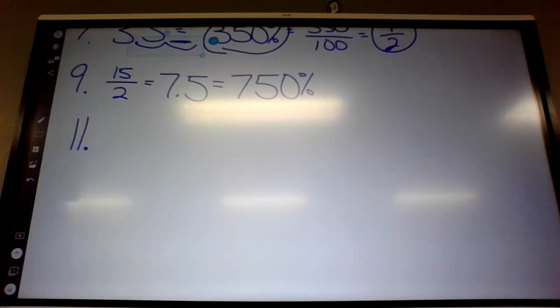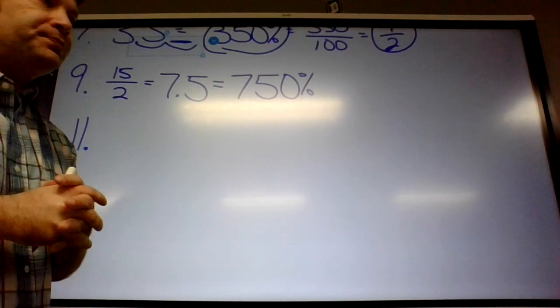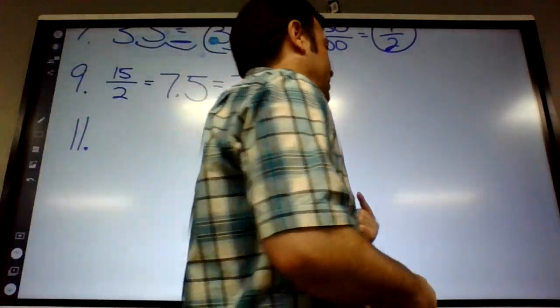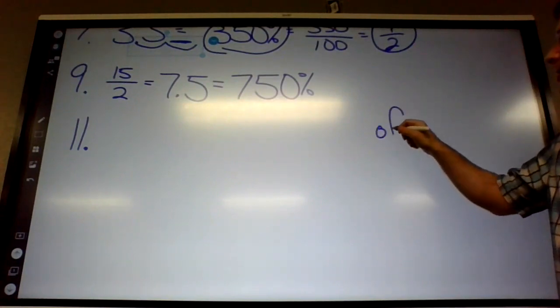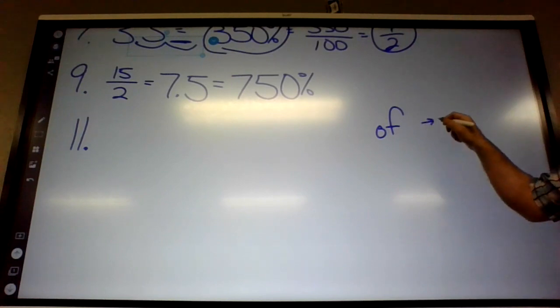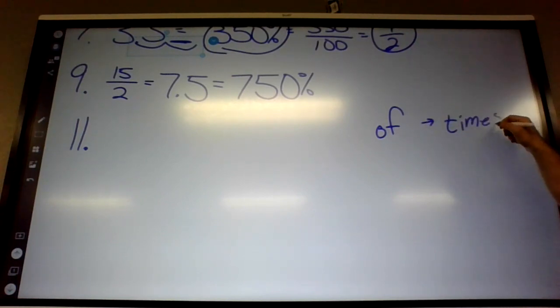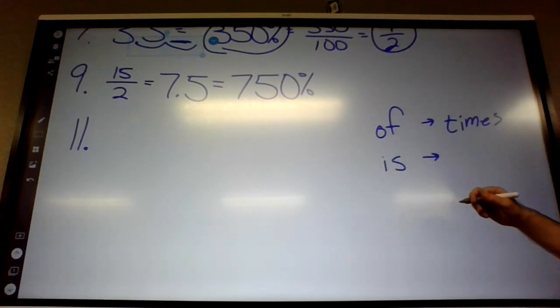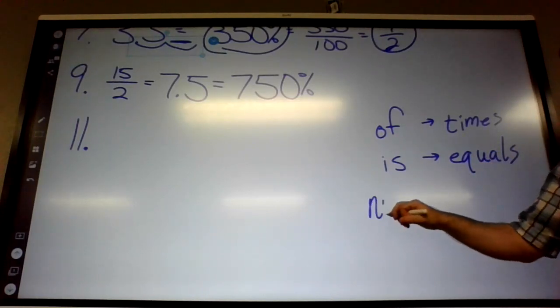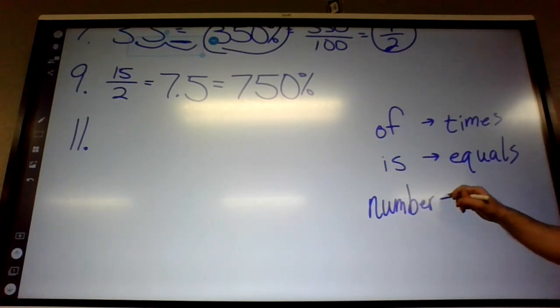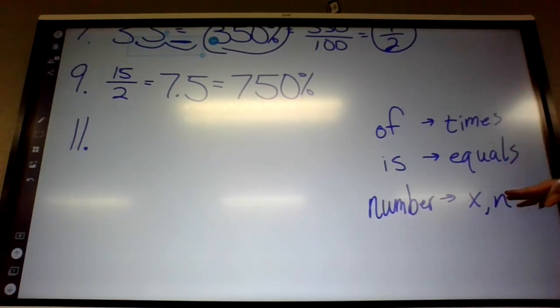Number 11, this is new. I haven't talked about this today. We need to know what a couple words mean in math. This goes back to chapter two. What does the word of mean in math? Times. What does the word is mean in math? Equals. If they say like number in the problem, what did we write down? A variable. I'll just say like X or something, or N or whatever. You can choose whatever. So this is how we are going to set these up. Everybody needs to pay attention on these.